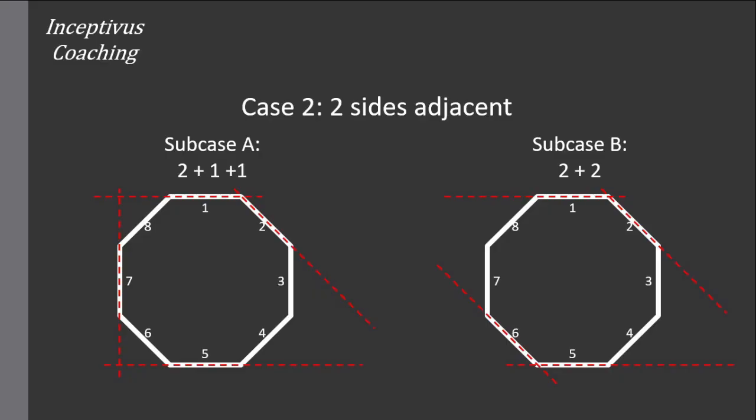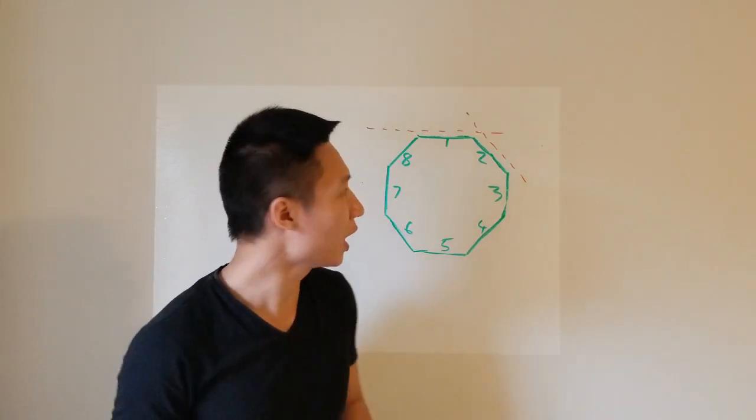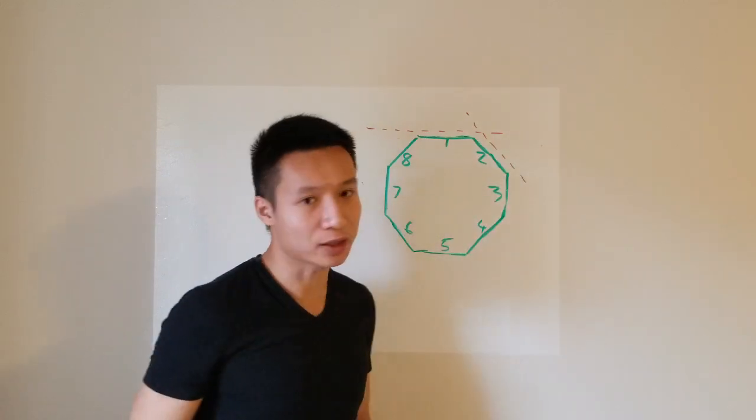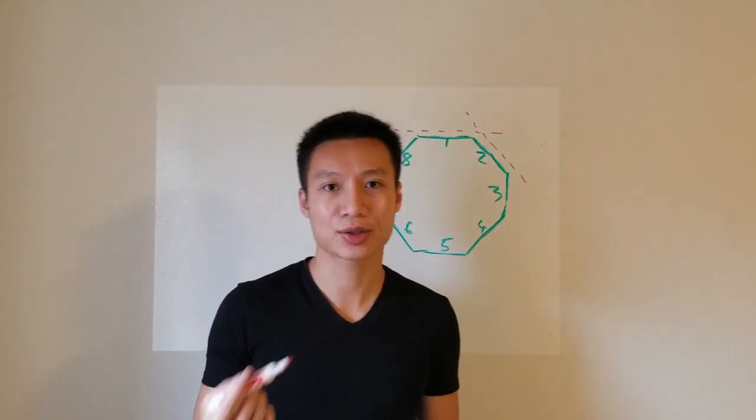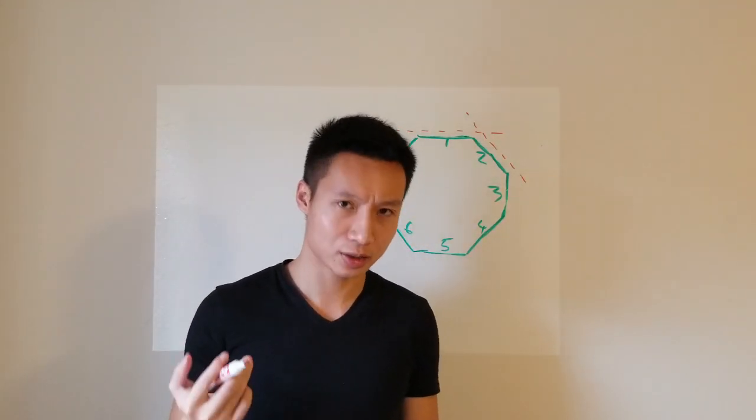Now let's consider case number 2, when you allow 2 sides to be together. Suppose I have number 1 and number 2 fixed. How can I choose the next 2 sides? Well, actually there are 2 sub-cases.